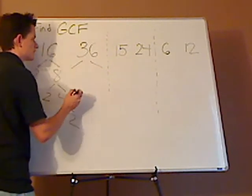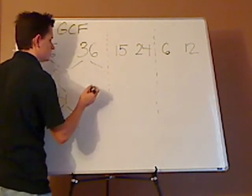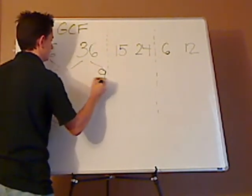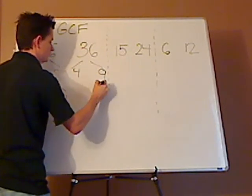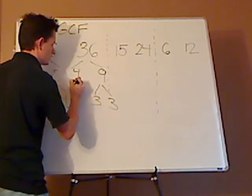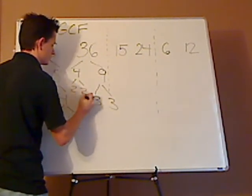I can do the same thing with 36. I know 36 is divisible by 9, so I can split it up as 4 and 9. And then 9 is 3 times 3, and then 4 is 2 times 2.